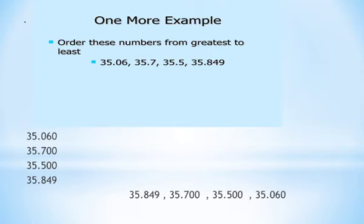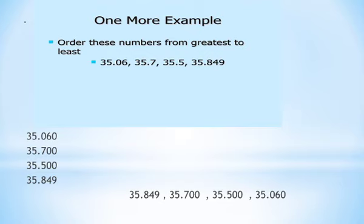The whole number in all the numbers is 35, so look at the tenths place: 0, 7, 5, 8. The greatest is 8, so 35.8 is the greatest number in this set. From the other three numbers, the tenths digit 7 is the greatest, so 35.7 is the next number. Comparing the remaining two, the tenths digit 5 is greater, so 35.5 is next, and the last smallest number is 35.06.